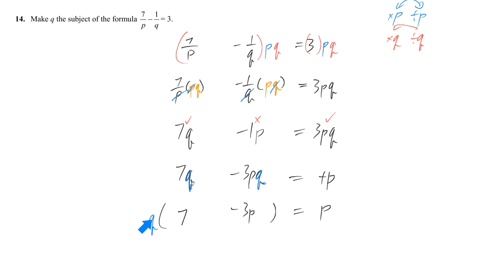Final step, I want Q. I don't want this bracket. So, just divide both sides by this same thing. And do the same on the other side, to be fair.